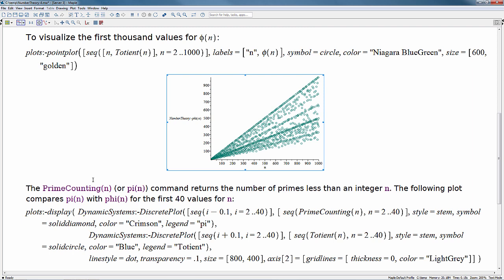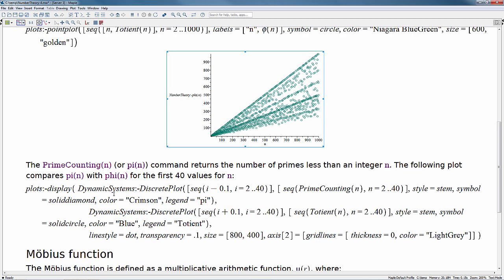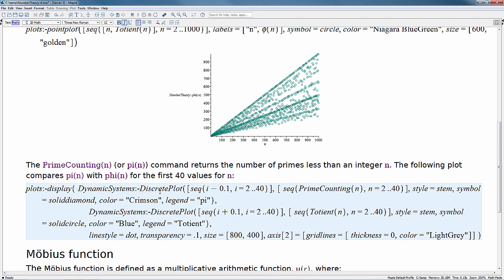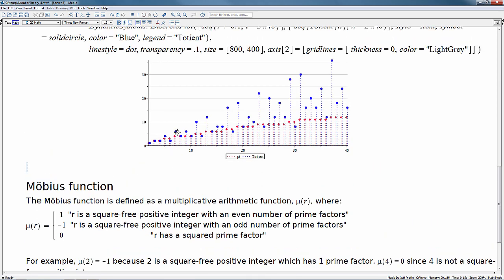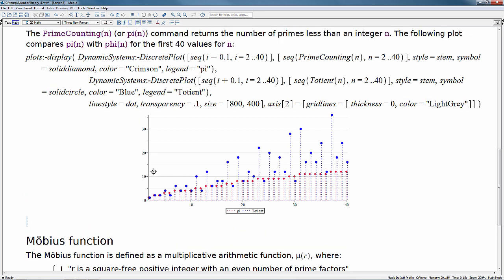Now to contrast this, we can look at something like the prime counting, otherwise known as the pi command, which returns the number of primes less than an integer n. And I'm going to use something out of the dynamic systems package called a discrete plot. The reason I like using this plot is it gives us these little tails for our points. So here we can see in red the pi, which is our prime counting, so we can count the number of primes less than a value. And the blue here is our totient. So we can use this as a way of contrasting these two to see how these stack up over say the first 40 values.